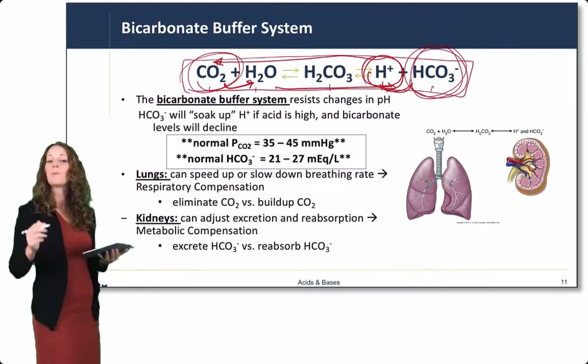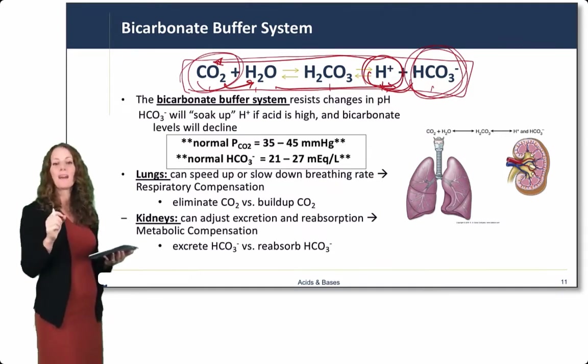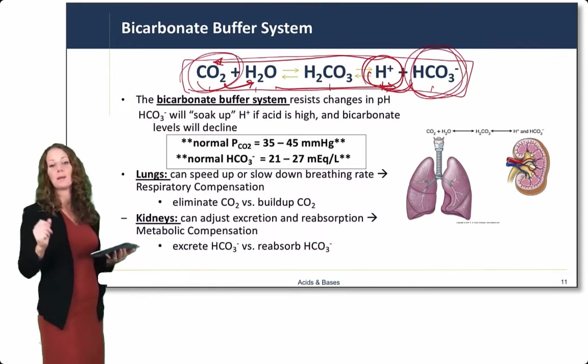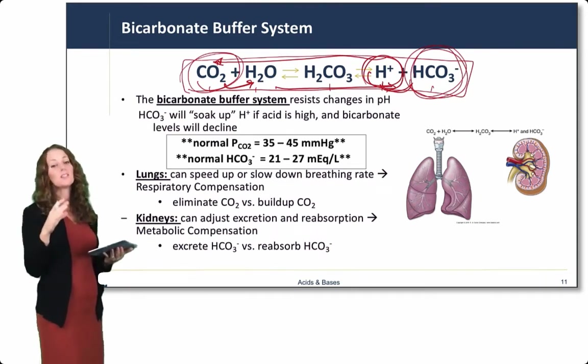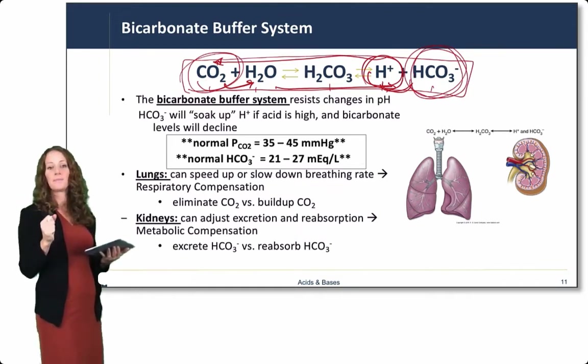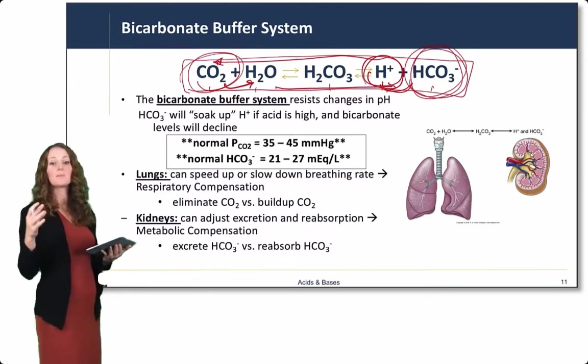Now let's look at some normal values for carbon dioxide and bicarbonate in the body. The normal partial pressure of carbon dioxide, which is similar to its concentration but because it's a gas we measure in partial pressure, is 35 to 45 millimeters of mercury. The normal bicarbonate level is 21 to 27 milliequivalents per liter.